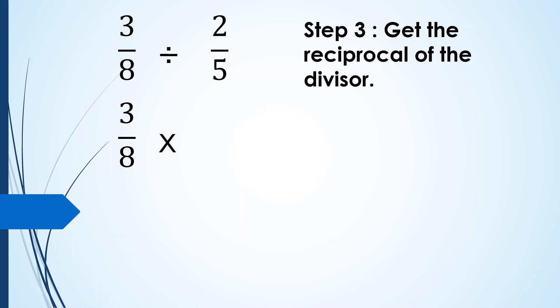For step 3, we are going to get the reciprocal of the divisor. Kapag sinabi natin reciprocal, ang gagawin lang natin ay pagpakalitin yung position ng numerator at denominator. So yung 2 mapupunta sa baba at yung 5 naman sa taas. So magiging 5 over 2. 5 over 2 is the reciprocal of 2 over 5.